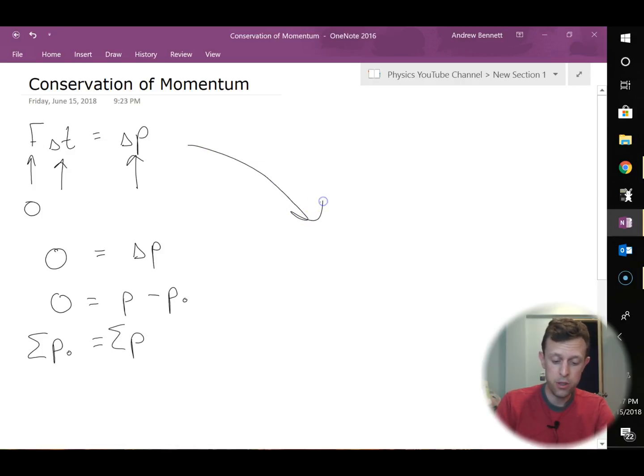Now, incidentally, if you don't make the force equal to zero, we still can get a very similar equation here. So we get F delta T equals P minus P naught, and I'll go ahead and add the sigmas in there too, the totals. And then we add the P naught to both sides, and we find the total initial momentum...